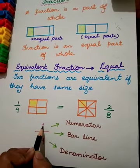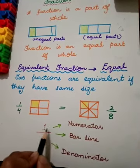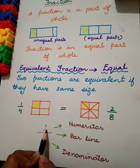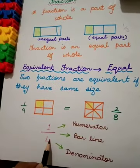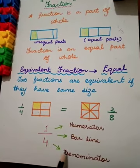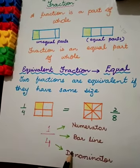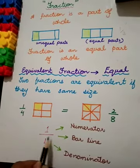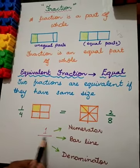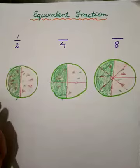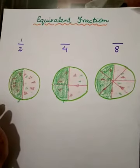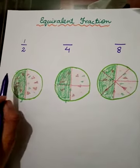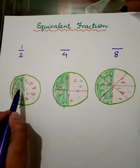Now you know that a fraction has two parts. The upper part is called the numerator and the lower part is called the denominator, and both parts are separated by a bar line. Let me give you another example.